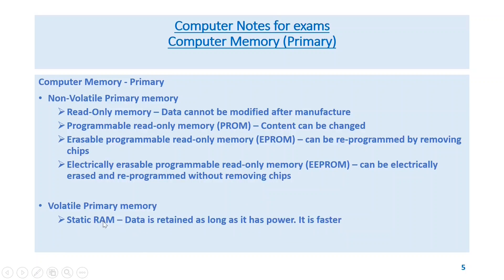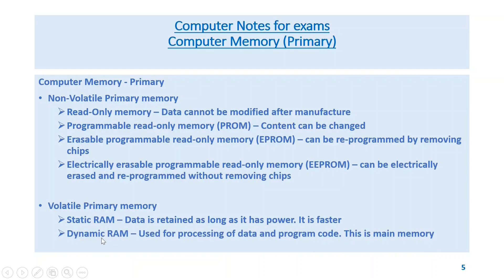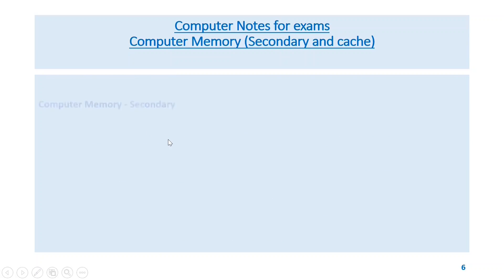Volatile primary memory includes static RAM. RAM — random access memory — data is retained as long as it has power and it is faster. Dynamic RAM is used for processing of data and program code; this is the main memory.